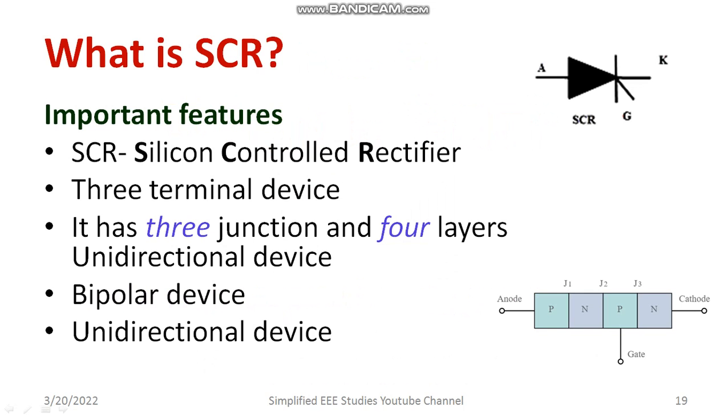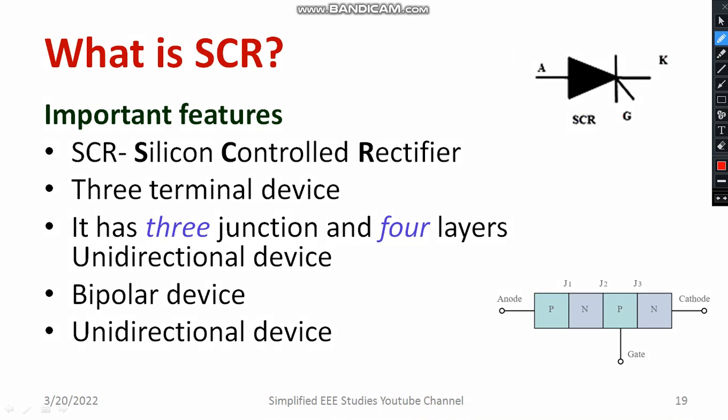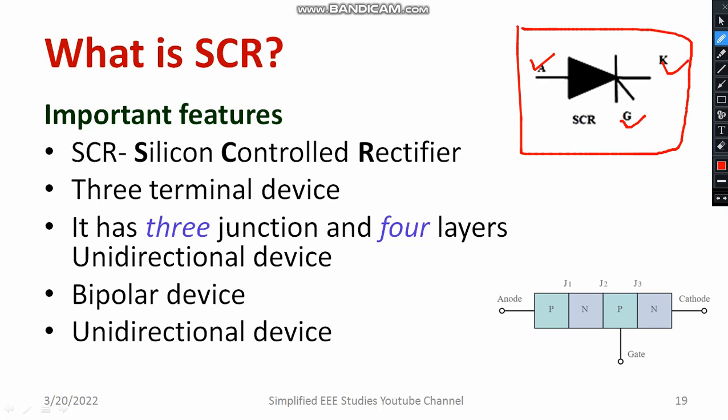What do you mean by Silicon Controlled Rectifier and what are the salient features of Silicon Controlled Rectifier? As you can see, the basic representation of Silicon Controlled Rectifier or SCR is in this fashion. It is a three terminal device — that is anode, cathode, and gate — where gate is a control terminal and anode and cathode are both called power terminals. SCR is one of the more important family members of Thyristors. I already discussed Thyristors in detail in the last session, and I request you to watch my previous video available in the i-button of this session.